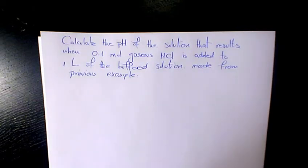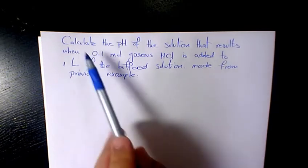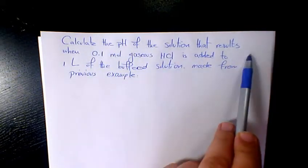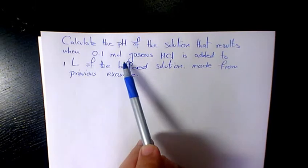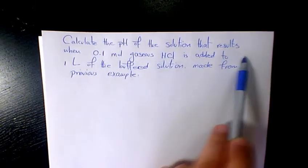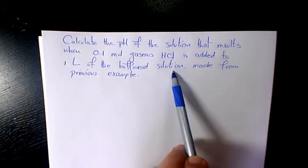What's up guys, this is Massey. Welcome to another video. In this video I want to show you how to find out the pH of a solution. Here we need to calculate the pH of a solution that results when 0.1 mole of gaseous HCl is added to 1 liter of the buffer solution we saw in the previous example.